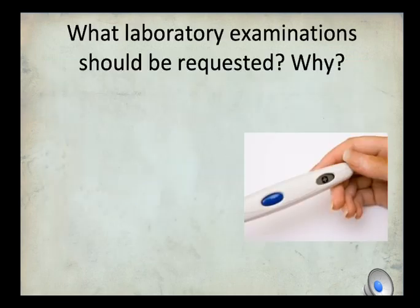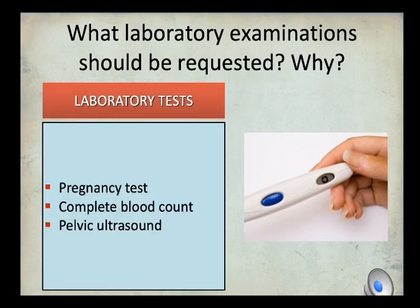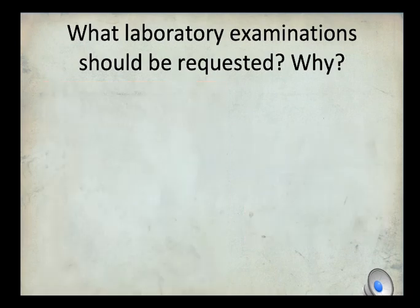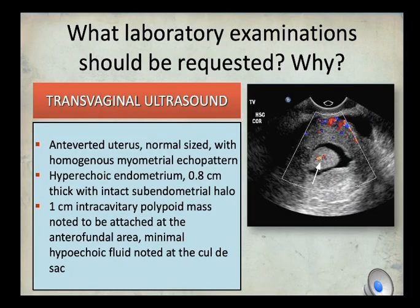Laboratory examinations for Case 2: pregnancy test to rule out pregnancy-related causes (the most common cause of AUB in the reproductive age group); CBC with level A recommendation to assess severity, hemodynamic stability, and guide management regarding iron supplementation, hospital admission, or blood transfusion; and an ultrasound to rule out organic or structural causes. Results: hemoglobin normal, pregnancy test negative. Transvaginal ultrasound showed a normal-sized uterus with thick endometrium at 0.8 cm and a 1 cm intracavitary polypoid mass attached at the fundal area.